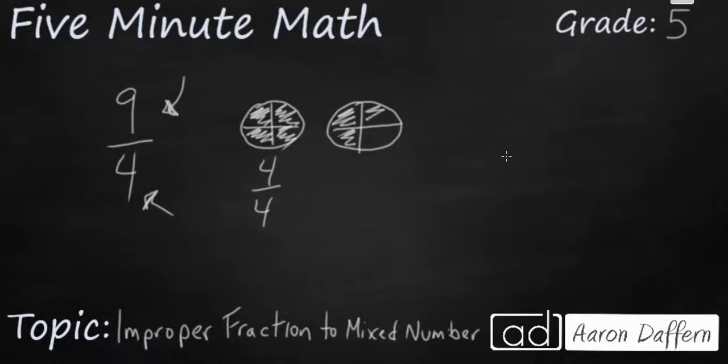5, 6, 7. Then there's another 4 fourths. So I've got 8 fourths so far. So I'm just going to draw a third circle, break it up into fourths, and I'm just going to shade in that last fourth. And now I've got 9 fourths.